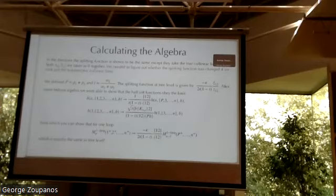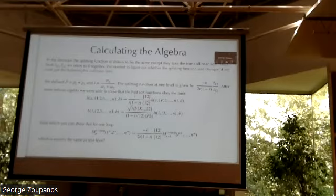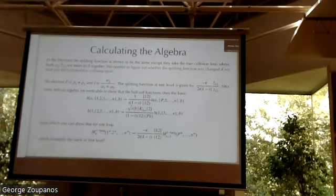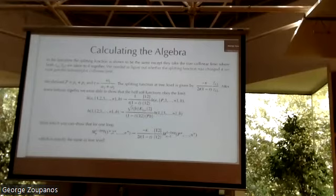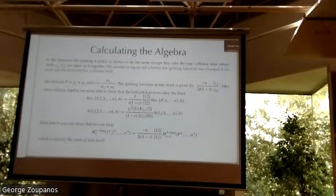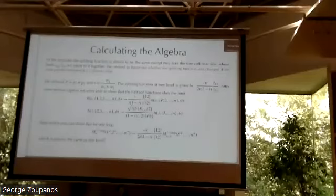We're interested in the holomorphic collinear limit where only z_{12} → 0. So we had to confirm that the splitting function is the same in this case. We define P as the sum of the two momenta being taken collinear, and t = ω₁/(ω₁ + ω₂). The tree-level splitting function is already known. You then take the complicated half-soft functions and look at what happens in the collinear limit. After some algebra, one type of half-soft function has one limit, and another type has another limit — the difference being whether the index a is arbitrary or set to b₁. Plugging everything into the formula for the one-loop n-graviton amplitude, you can show you get the same tree-level splitting function.